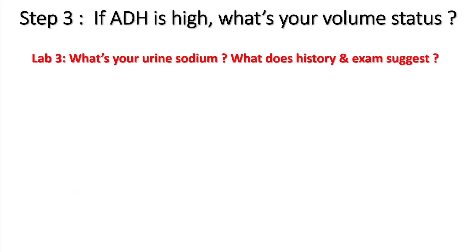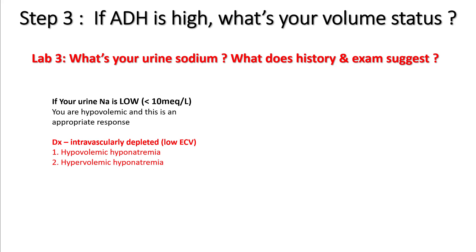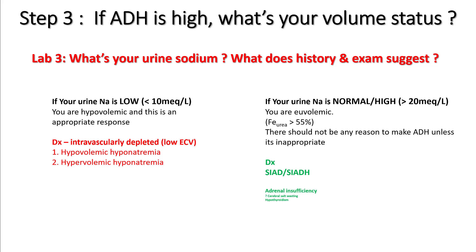If your ADH is high, try to figure out what your volume status is. For this, check your urine sodium and also consider what your history and exam suggest. If your urine sodium is low — less than 10 mEq per liter — you are most likely dealing with hypovolemia, and this is an appropriate response because of baroreceptor reflexes. This would be seen in intravascularly depleted patients in both hypovolemic and hypervolemic hyponatremia. If your urine sodium is normal or high, that means you are euvolemic and there should be no reason for your body to make ADH — this is seen in SIADH or SIAD.